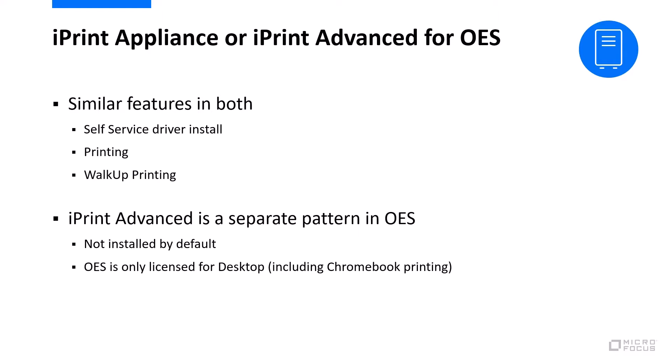Just be aware that it's not installed by default. The iPrint that's installed by default isn't the advanced version with the features I'm going through in this video. They both have more or less the same features — self-service printer driver install, obviously printing, and walk-up printing where you can print to a queue and then at a later stage release that to a printer. By the way, with your OES maintenance, you're also allowed to run the iPrint appliance if you wish. Something to bear in mind, though, is that the OES maintenance entitlement is only for desktop licenses.